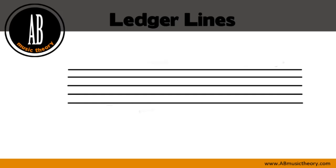Welcome back to another music theory video by abmusictheory.com. Today's lesson is about ledger lines. In music, you find that at times you need to write notes that extend above or below the five lines of the staff. In order to extend the range of the notes above or below the staff, we use what we call ledger lines. Let me show you how they look like.